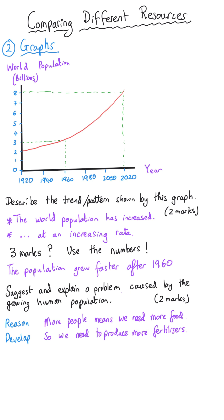Or a different answer might be these people need energy. And so we will have to burn more fossil fuels to provide that energy. And this will increase the carbon dioxide levels. And this will have a problem of increasing global warming and potentially causing climate change.